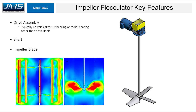Moving on to the impeller flocculator — again, the shaft is directly inserted into the gearbox, so all thrust and radial forces are experienced by that gearbox. The tip speed typically violates Ten State Standards of 3 feet per second, usually running in the 6 to 9 feet per second range, meaning floc particles are sheared at the blades. These rely on the pumping action of the water to create flocculation, and the output is generally a low-quality pin floc. A CFD analysis shows high shear areas at the impeller versus the paddle wheel.